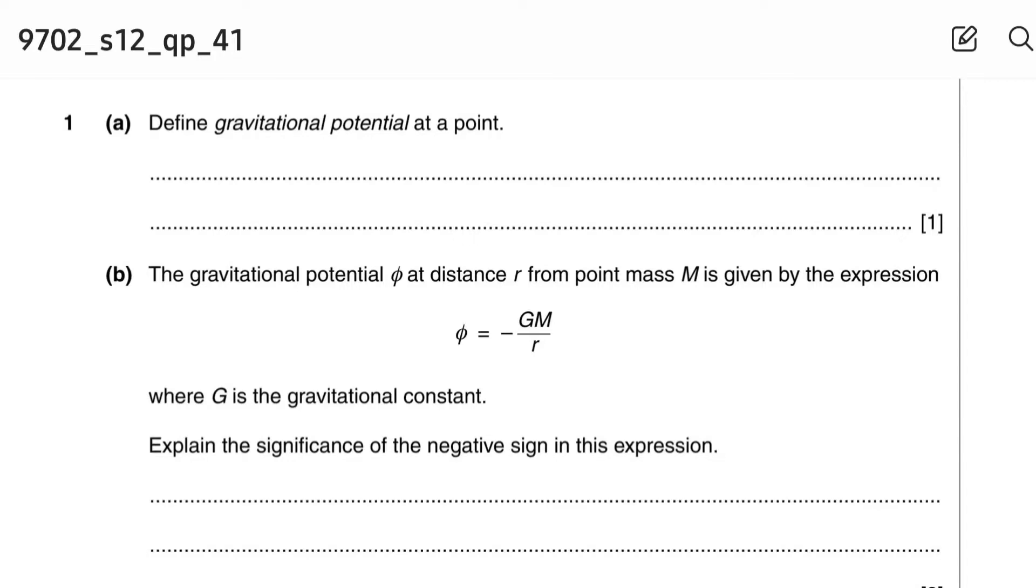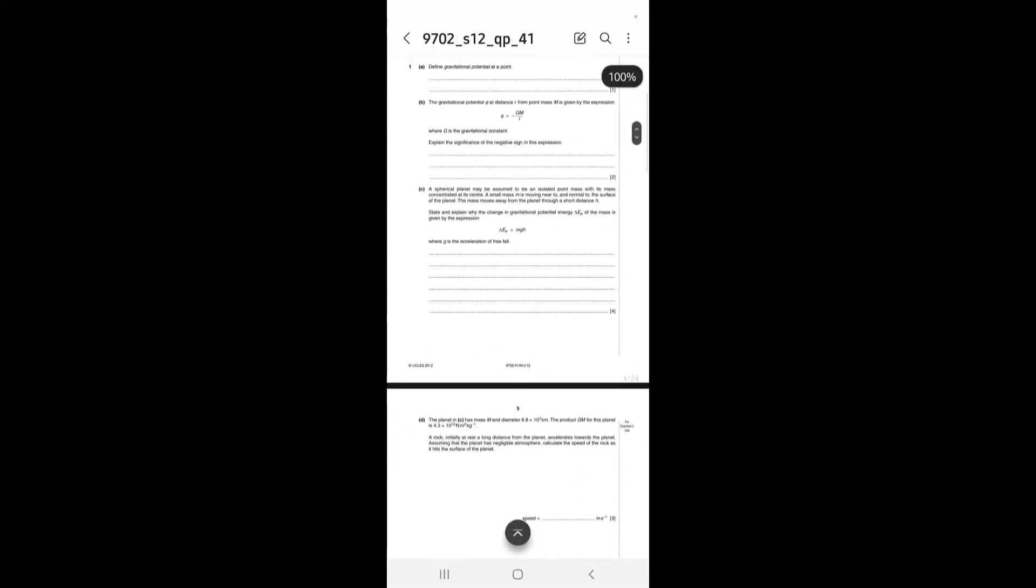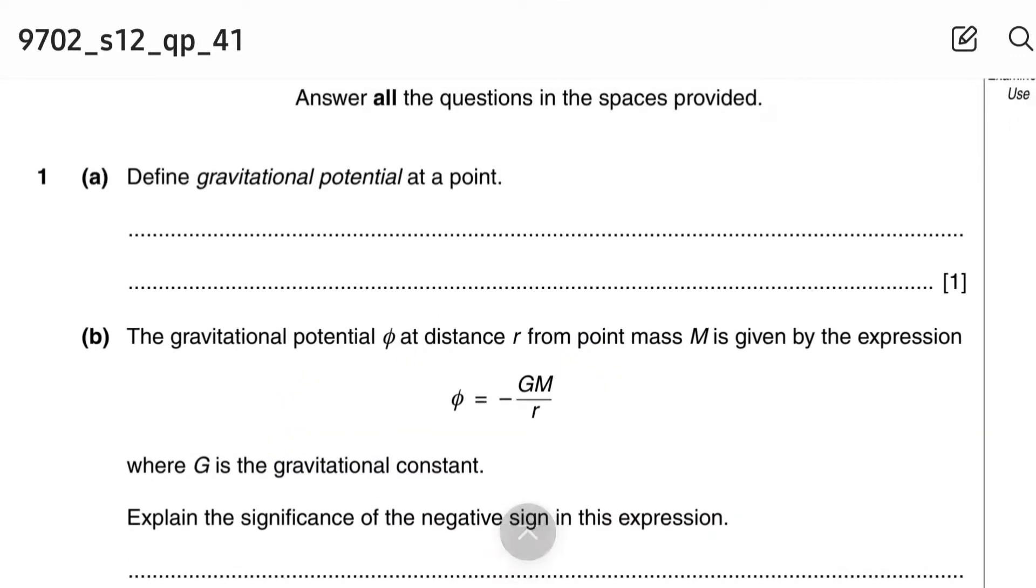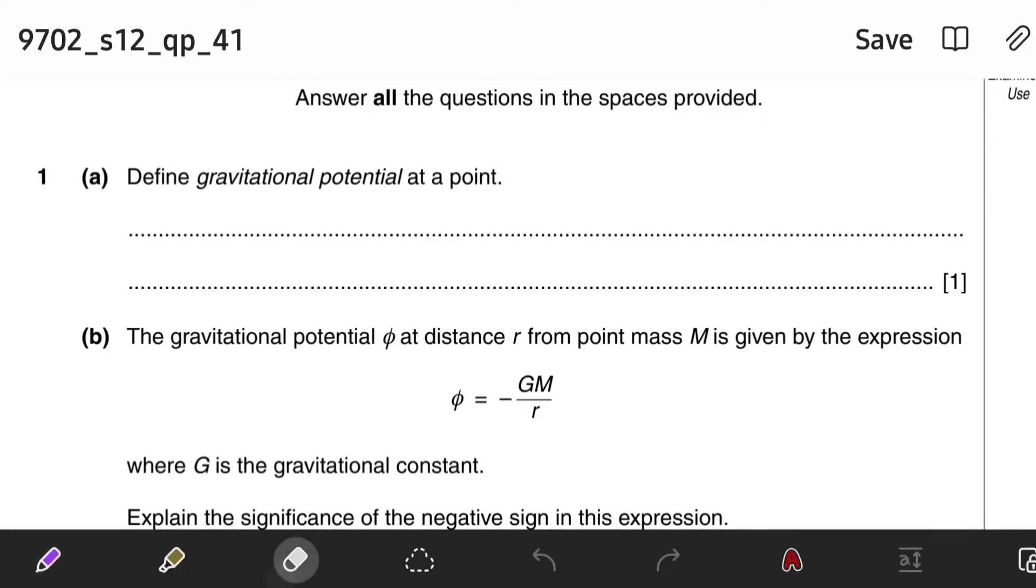Gravitational potential at a point is work done in bringing unit mass from infinity to the point.